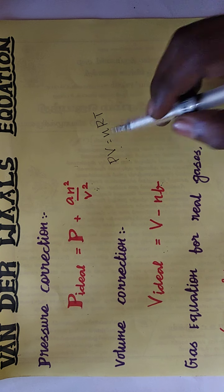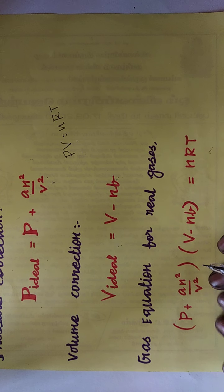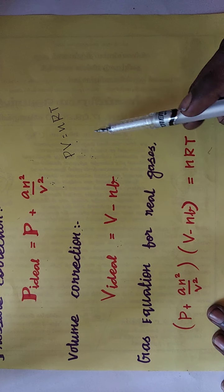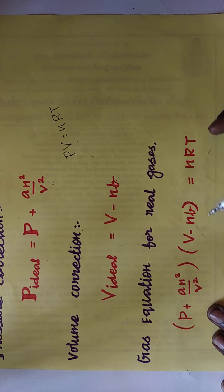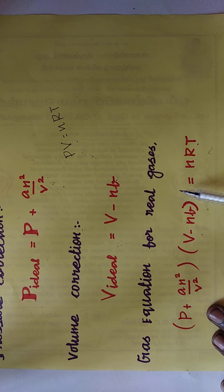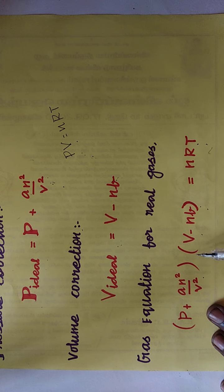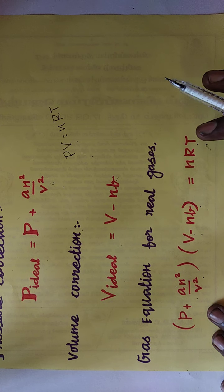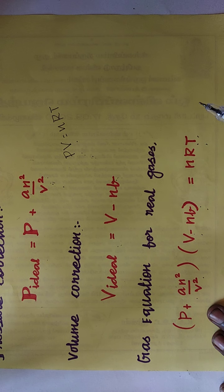In the ideal gas equation PV = nRT, we replace the pressure and volume terms with their corrected forms. Instead of P we write (P + an²/V²), and instead of V we write (V − nb). So the Van der Waals equation becomes: (P + an²/V²)(V − nb) = nRT. This is the corrected form of the gas equation to explain the real behavior of gases.